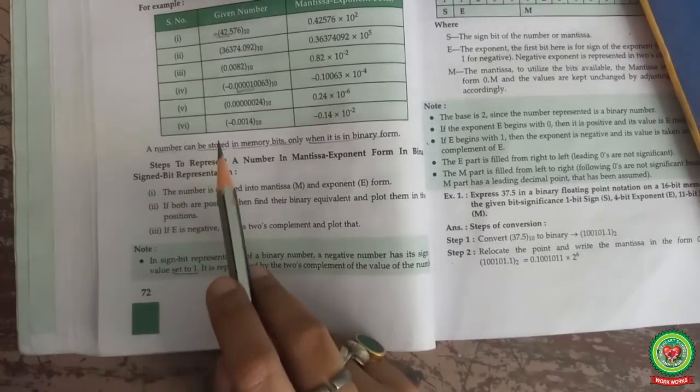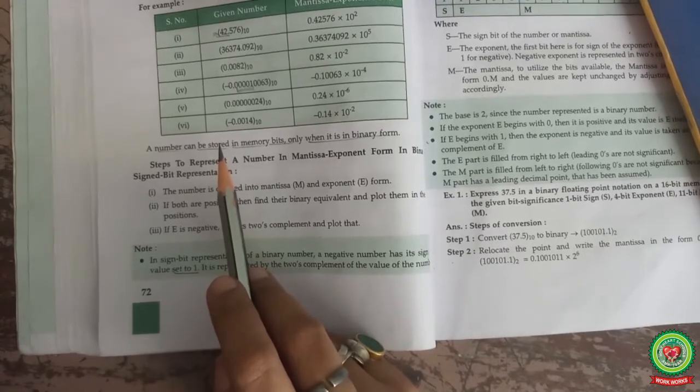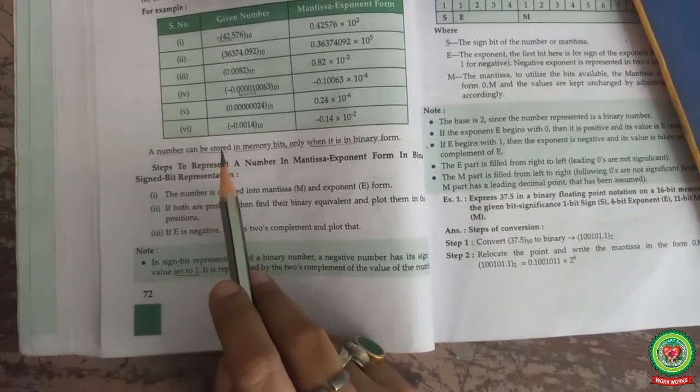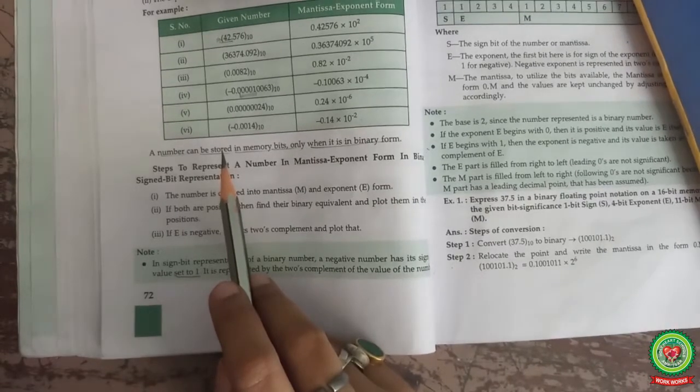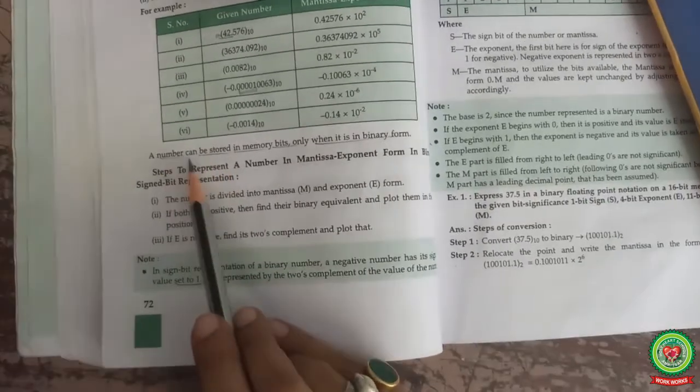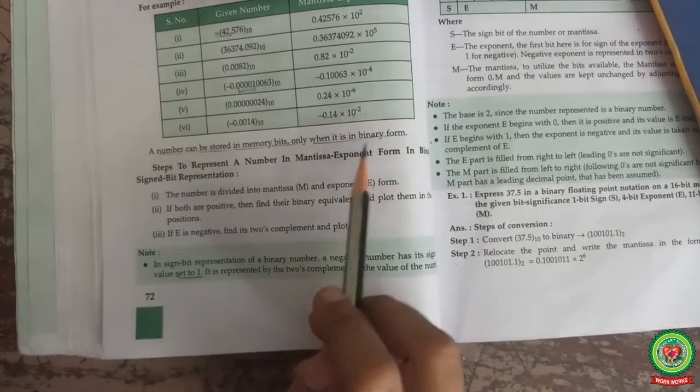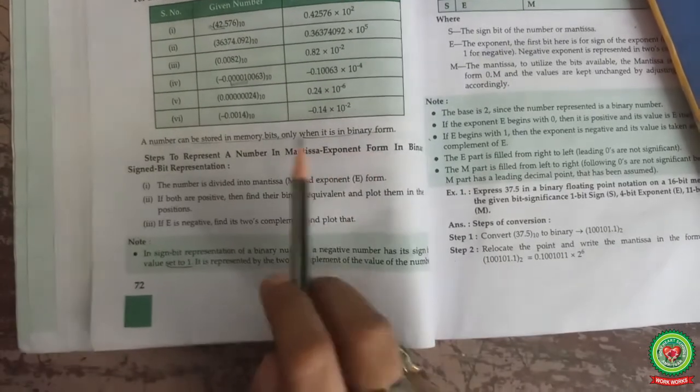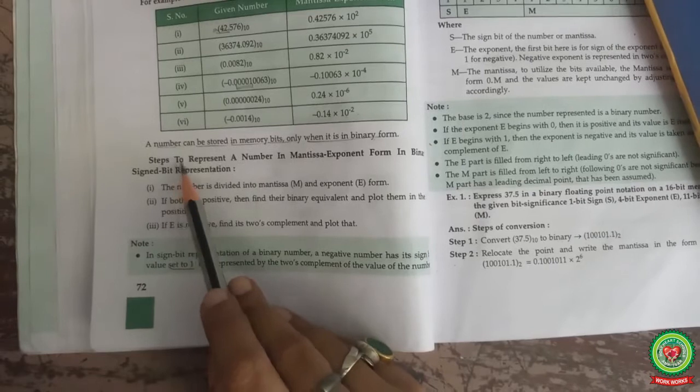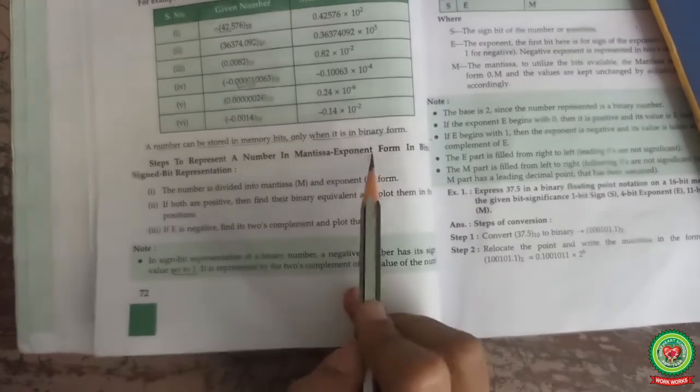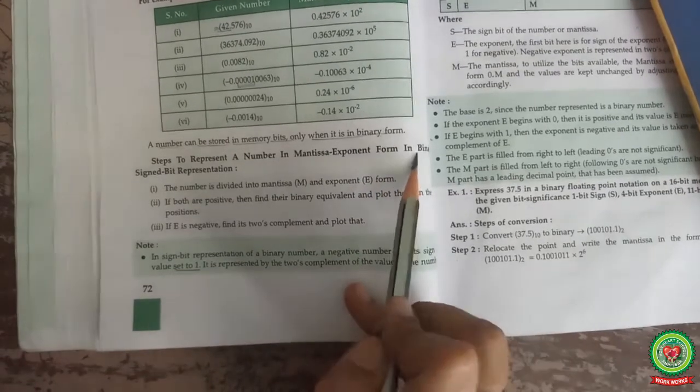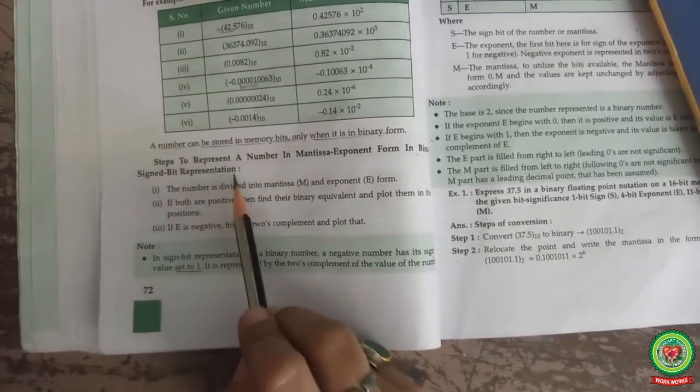As you know, computer can understand only machine language. Whenever a number is stored in computer, it is in binary form. A number can be stored in memory bits only when it is in binary form. We are going to discuss the steps to represent a number in mantissa exponent form in binary signed bit representation.